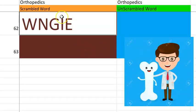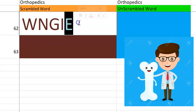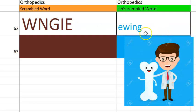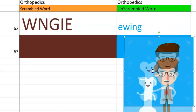62nd one — just two more guys. Very easy. Sarcoma, starting with E. It is in the diaphysis of the bone. Ewing's sarcoma.